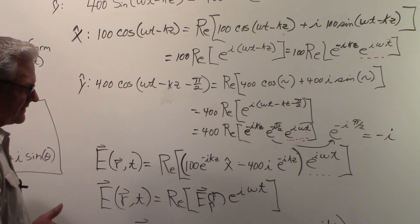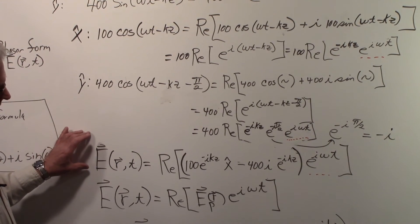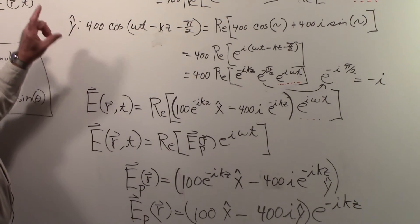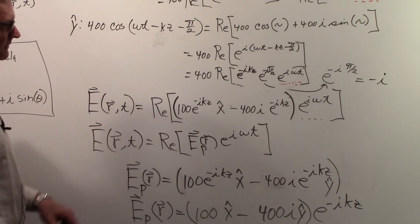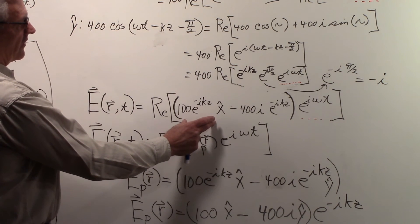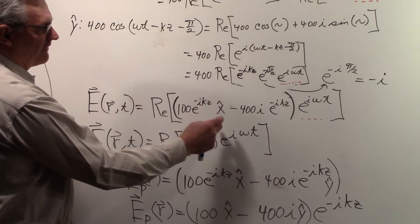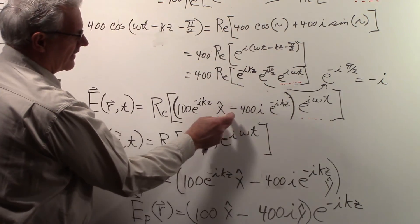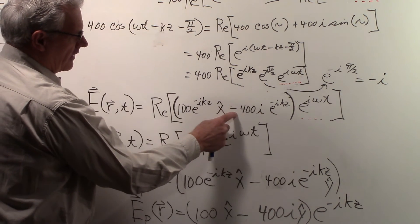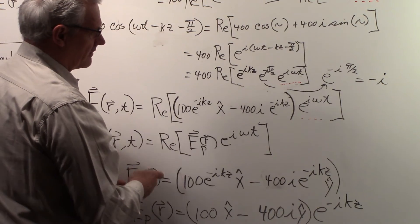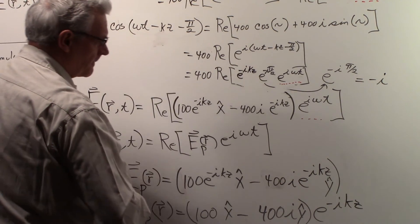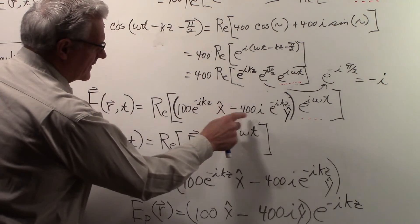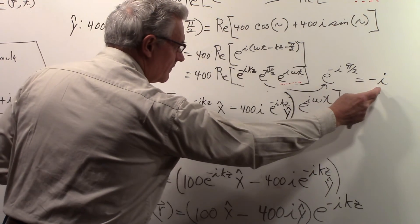So we can combine these now, the x component and the y component. And we can say our vector that we started out with is equal to the real part of what we found for the x component. And we're going to factor out the e to the i omega t out of both the x and the y component. So it's over here. And here's the y component now with a minus i, which came from that.